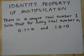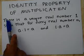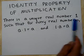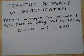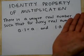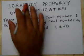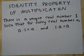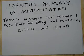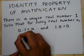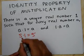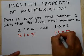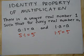The identity property of multiplication says the following: there is a unique real number 1 such that for every real number a, a times 1 equals a, and 1 times a equals a. It's called the identity element. For example, 5 times 1 equals 5, because 5 ones — 1+1+1+1+1 — equals 5. Or 1 times 5 equals 5, because if you have just one 5, you've got 5.